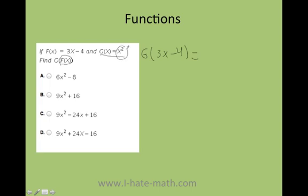Now here you have an x squared. So where the x is, we're going to substitute 3x minus 4 squared. Now be very careful here. This needs to be done this way: 3x minus 4 times 3x minus 4.